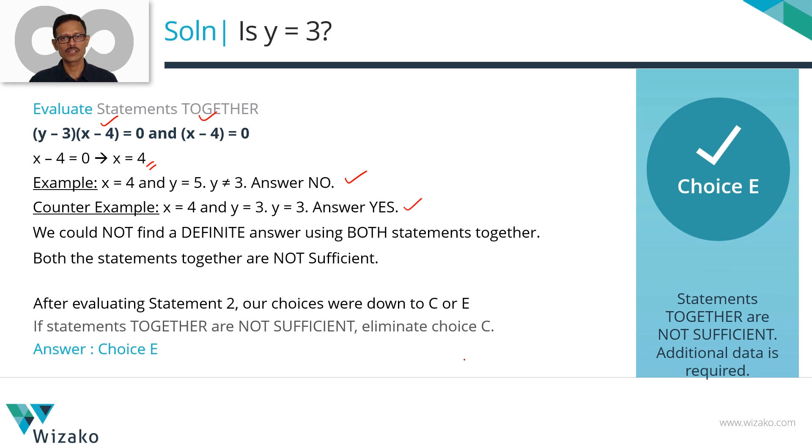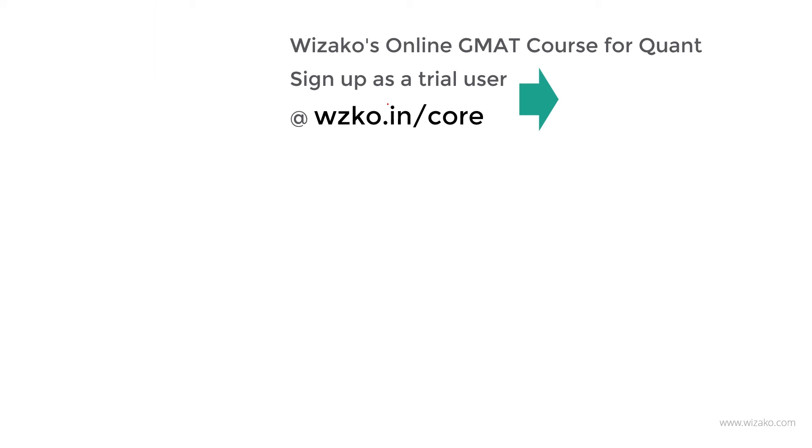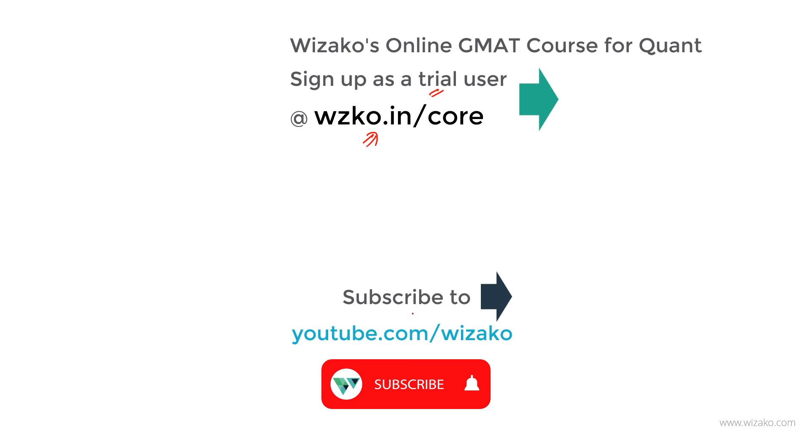Before you leave, do two things. One, sign up as a trial user at wzko.in/core. It's the most comprehensive and affordable GMAT online course for quant. Takes all of three minutes and three steps to get started with your online GMAT preparation. Start with statistics on average. It's a free topic. Take you about 3-4 days to complete this topic to get momentum into your preparation. Use this topic to get used to the teaching methodology UI UX. Once you've completed this topic, convert this trial user into a paid user and get access to the remaining 18 topics. Lastly, subscribe to this channel youtube.com/wizako and spread the word among your friends who are preparing for the GMAT.